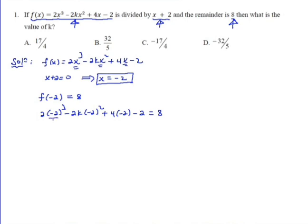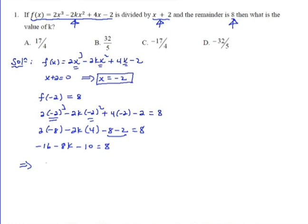So minus 2 cubed is minus 8. Minus 2k times minus 2 squared. 4 times minus 2 is minus 8, minus 2 is equal to 8. So minus 16 minus 8k minus 10 is equal to 8. So minus 8k is equal to 8 plus 16 plus 10, which is 74.